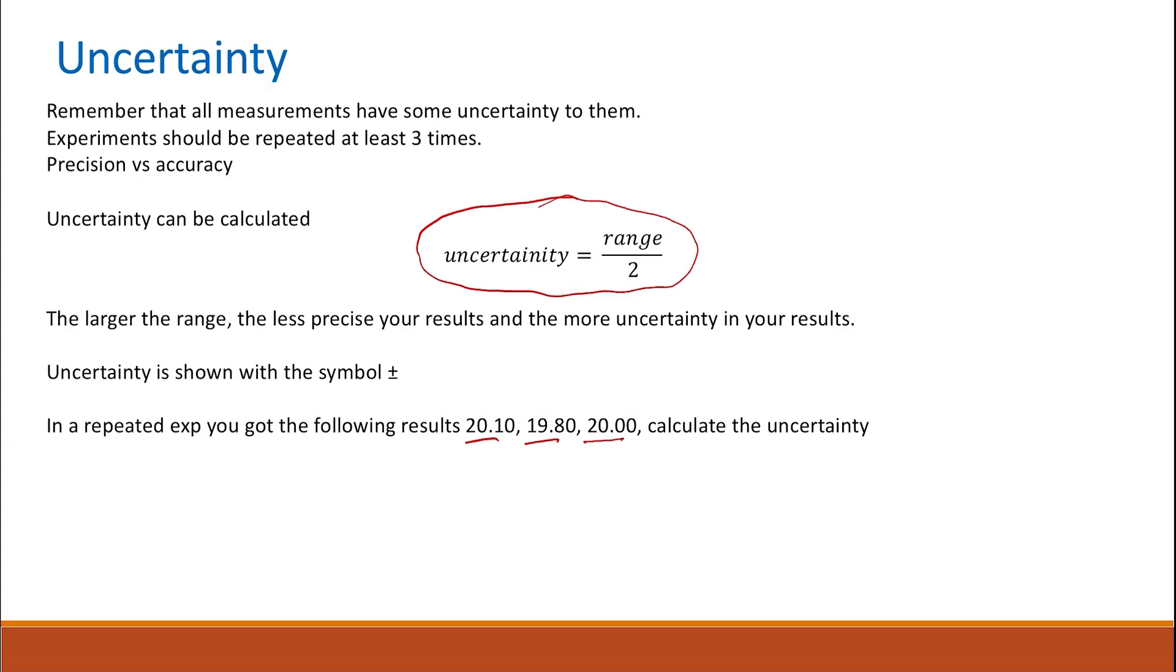It asks you to calculate the uncertainty. To do this, first, you need to calculate the average of your results because when you report the uncertainty, you don't just report the value of the uncertainty, but you also report the value you get or the average you get. To calculate the average, you add all the three values divided by 3, so it's 19.97.